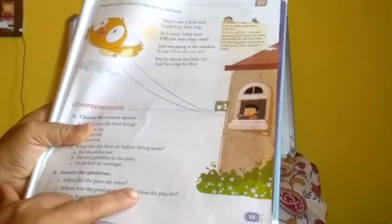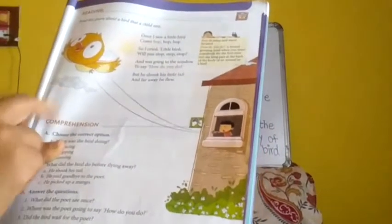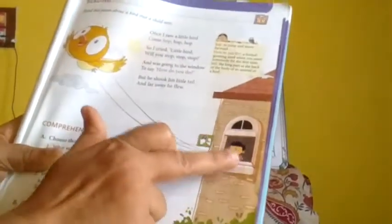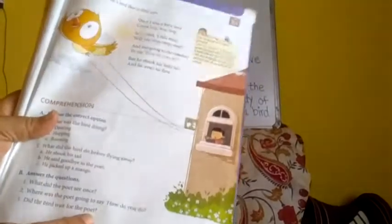Where was the poet going to say? He was going to the window. From here he was asking that bird how do you do, that means he was going to the window to say how do you do.